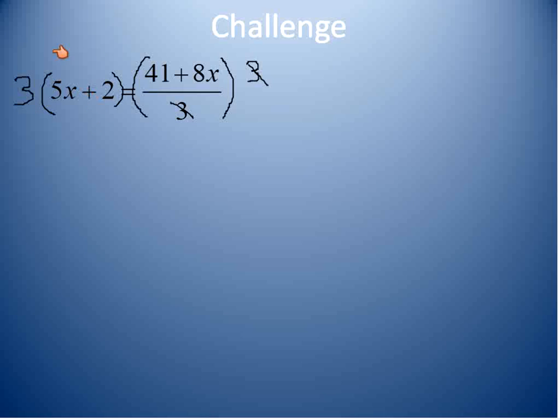Now, when this is over here, 3 times 5x plus 2, I have to remember my distributive property that whatever is outside the parentheses get multiplied times each term. So, I will end up with 15x plus 6. Again, that's a place where a lot of people make mistakes because they don't multiply this 3 times both terms. Now, I go back over to, that's my left side. I'll go back over to my right side. We've canceled out the 3's and we're left with 41 plus 8x. Now, this looks a lot more like the equations that we've done previously.